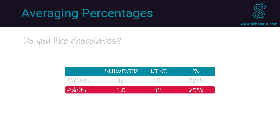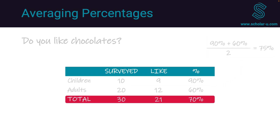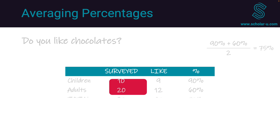Previously we suggested averaging the 90 and 60% to obtain 75%. However, if we look at the bottom row containing the totals, we see that we surveyed 30 people total and 21 of them like chocolates. 21 over 30 gives 70%, which is not equivalent to the 75% from the simple average. This discrepancy occurs because the number of children and adults surveyed are not the same.